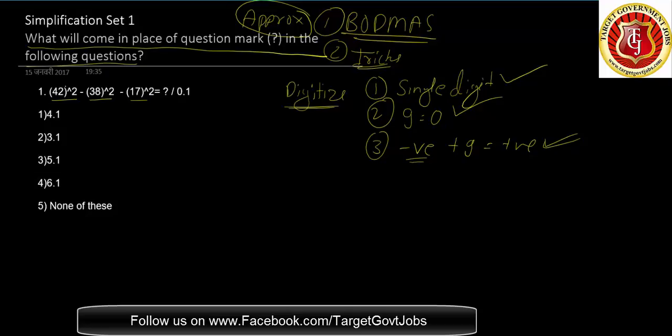You cannot use this in approximation, only when the calculation is exact. When we're solving 42 squared, 4 plus 2 is 6, and 6 squared is 36, and 36 is 3 plus 6 equals 9, which equals 0. So this term is 0.